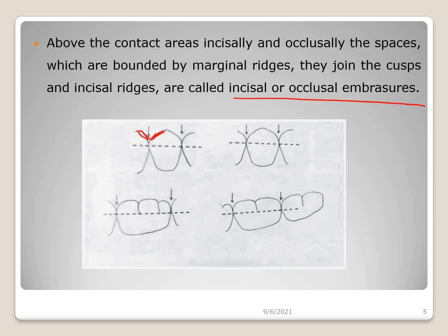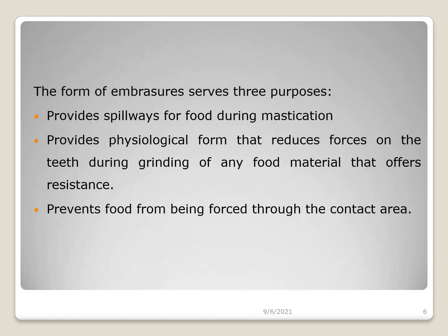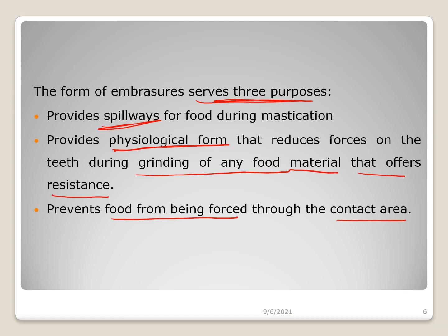These natural embrasures are called buccal or lingual embrasures according to their position. Above the contact area, incisal or occlusal embrasures are present, bounded by marginal ridges along the margins of adjacent teeth joining the cusp and incisal ridges. The form of embrasures serves three purposes: providing a pathway for food during mastication, helping in grinding of food material, and preventing food from being forced into the contact area.